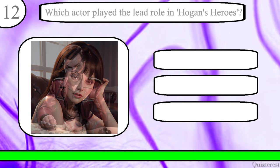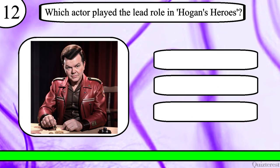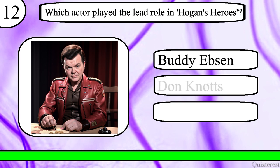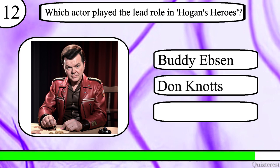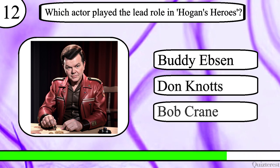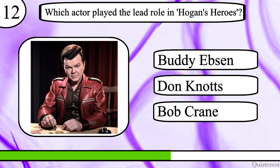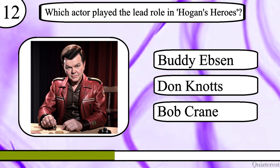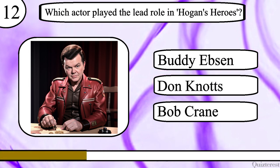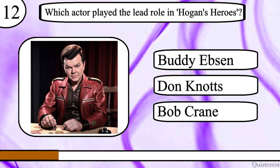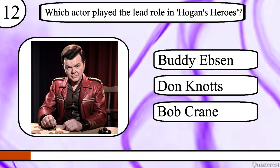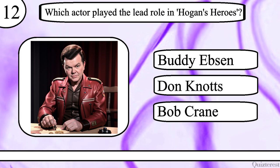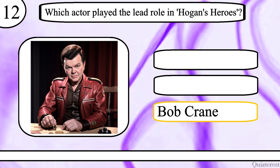Question 12. Which actor played the lead role in Hogan's Heroes? Buddy Ebsen, Don Knotts or Bob Crane? The correct answer is Bob Crane.